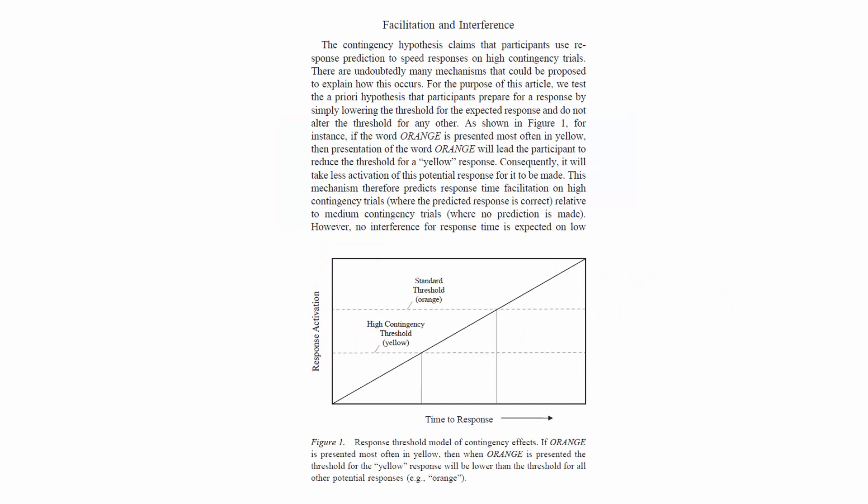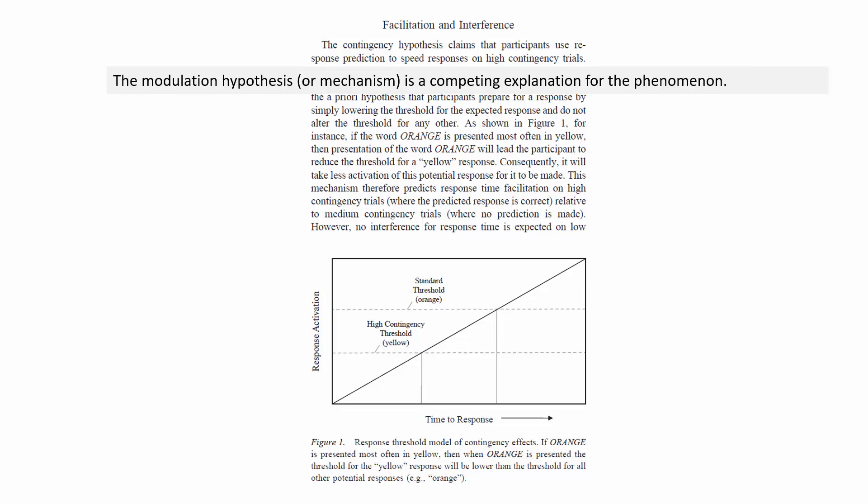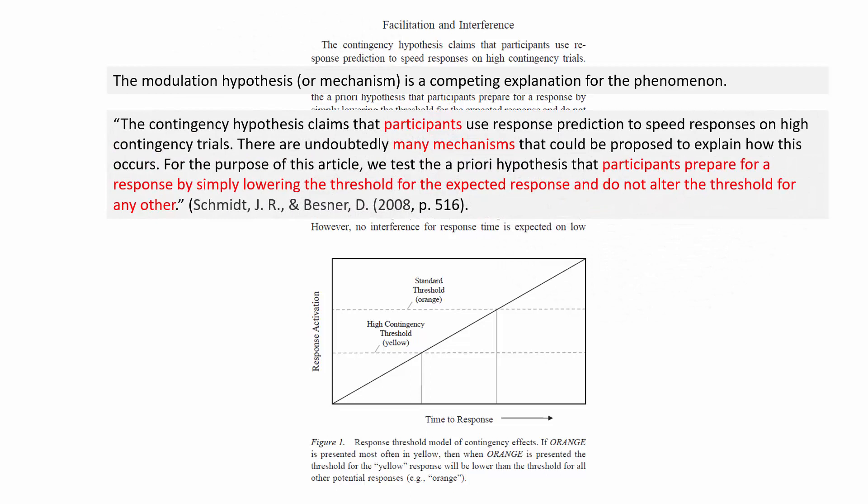To see clearly that the authors were seeking this inference, Figure 1 from their paper provides a threshold model that explains why the fewest errors were expected for the high condition and the most errors for the low condition. This threshold mechanism is thought to offer a better explanation than what the authors referred to as the modulation hypothesis. The contingency hypothesis claims that participants use response prediction to speed responses on high contingency trials. For the purpose of this article, they test the a priori hypothesis that participants prepare for a response by simply lowering the threshold for the expected response and do not alter the threshold for any other.